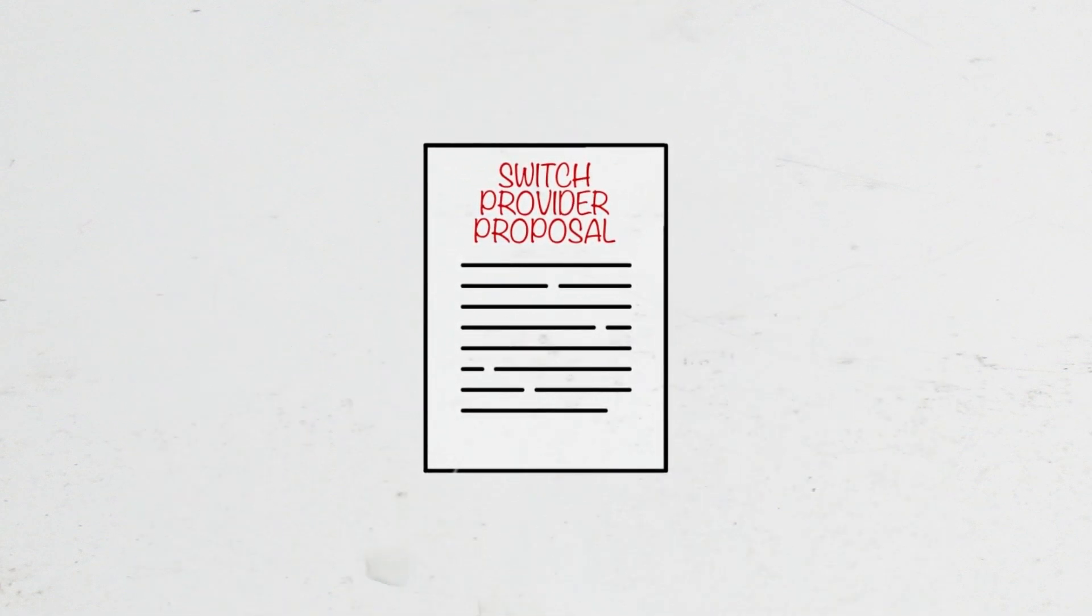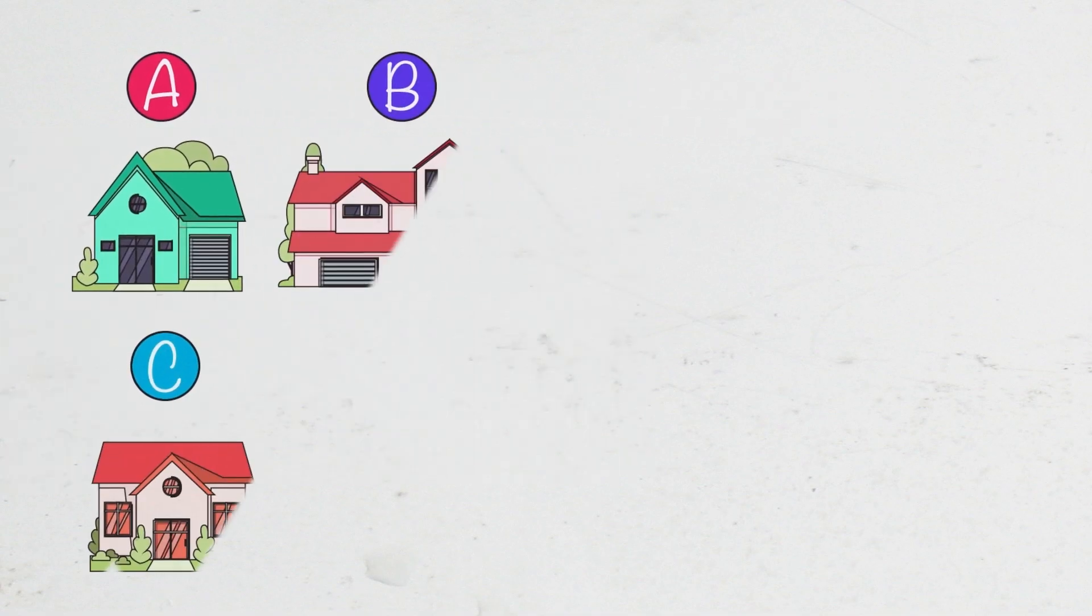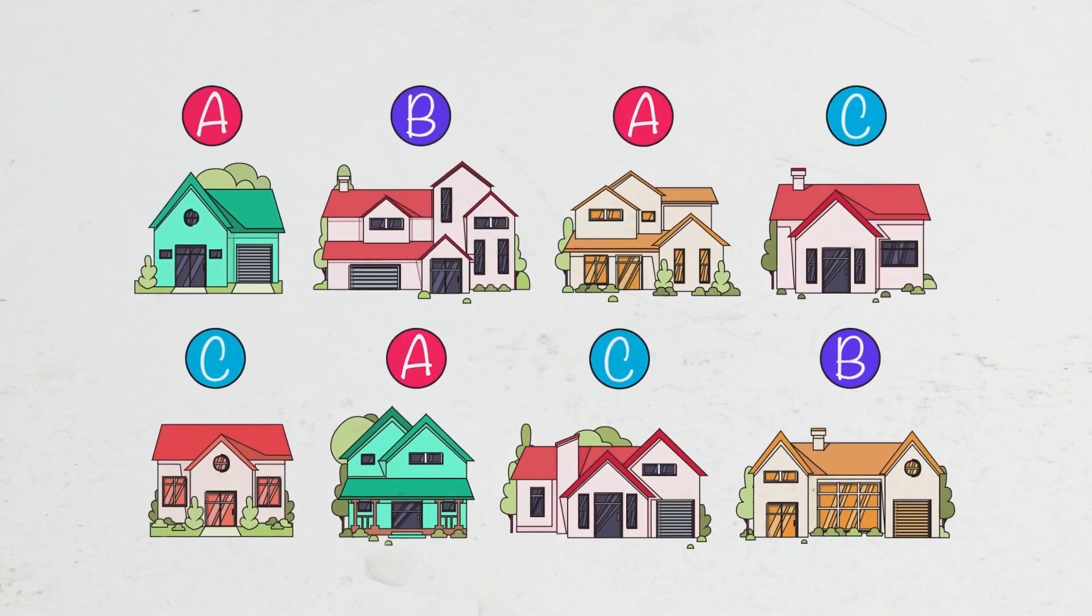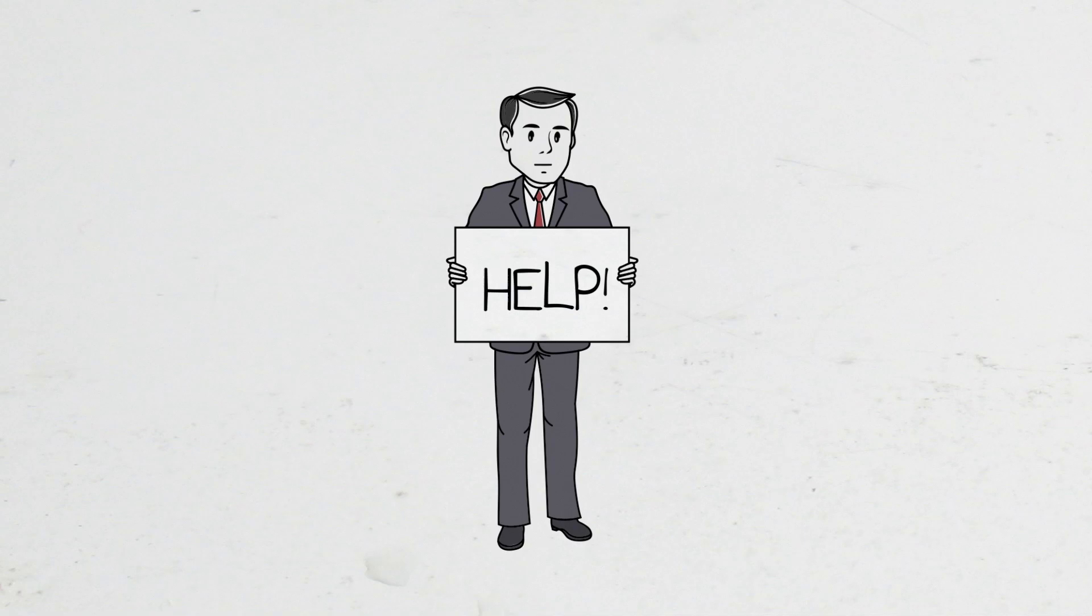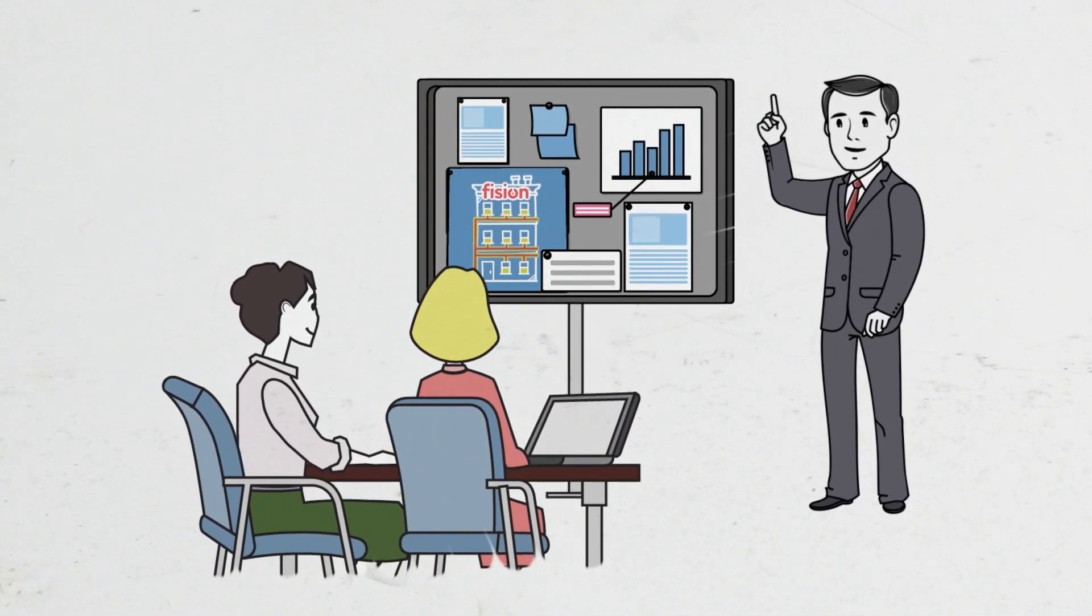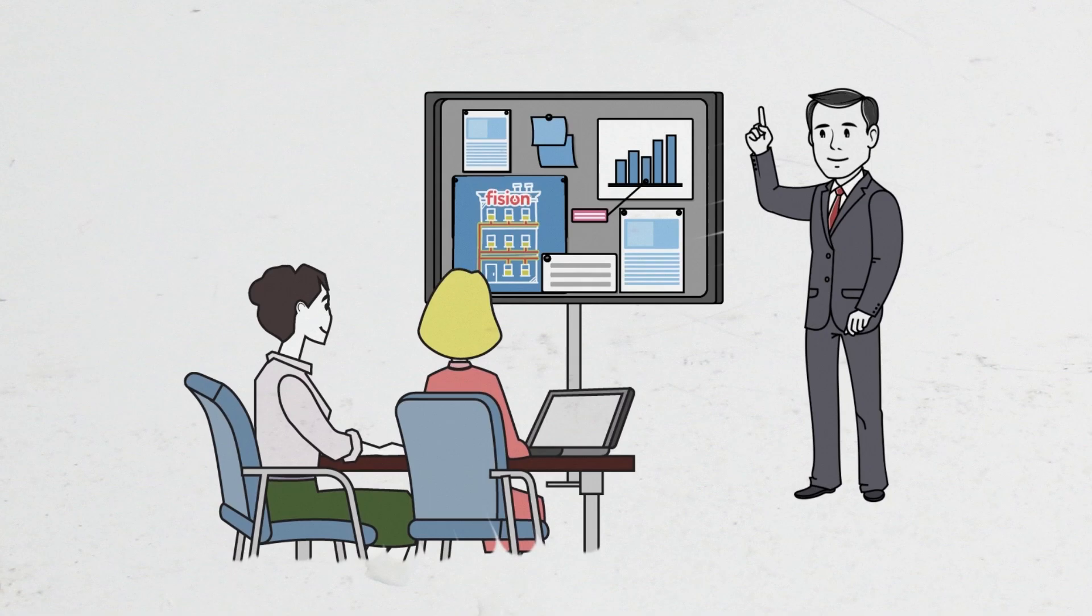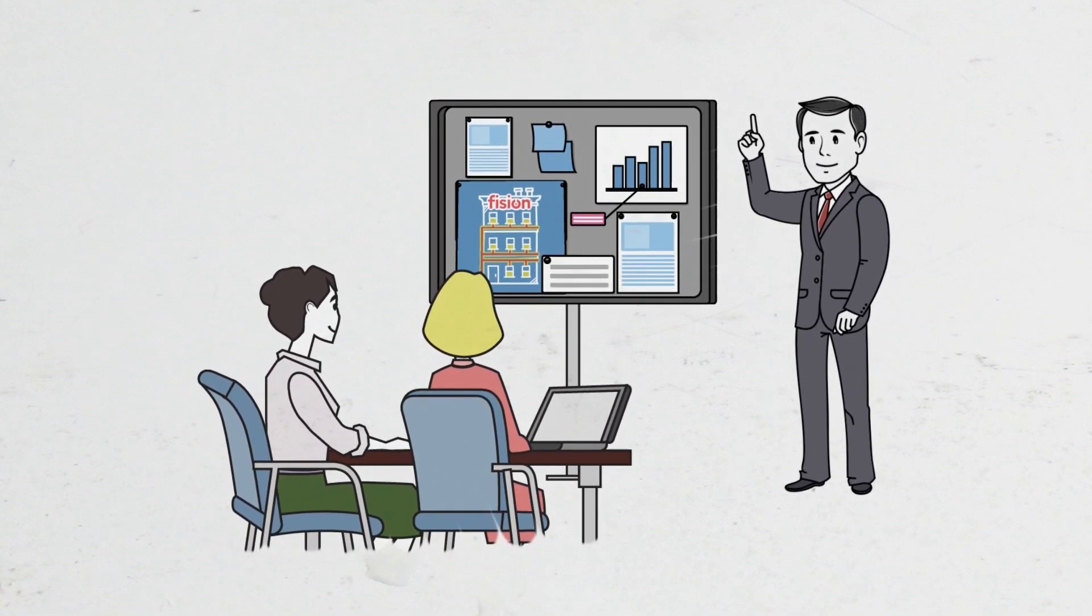Proposing a switch to a community-wide bulk agreement after residents are used to selecting their television and internet services at retail can be daunting. But when homeowners hear about how much money can be saved and how much their services can be improved, objections seem to disappear.